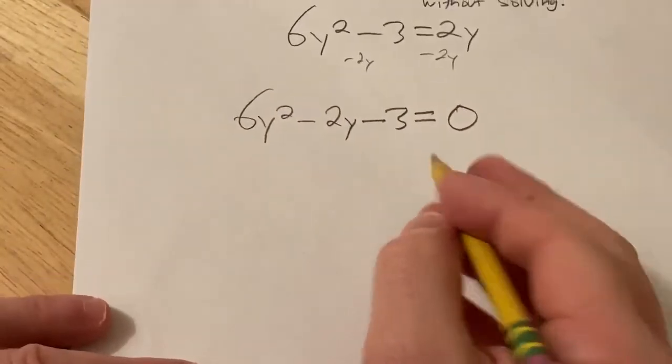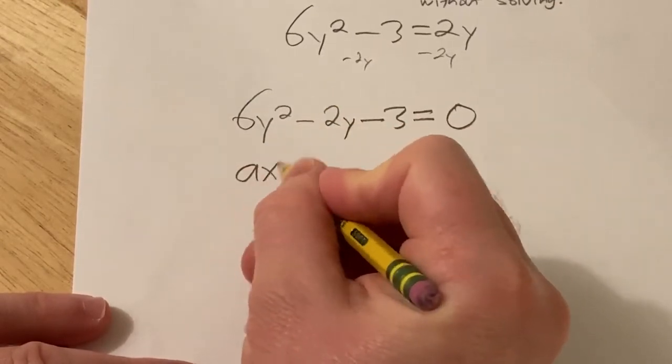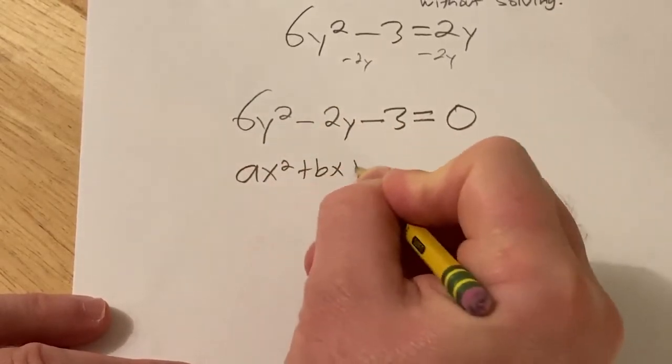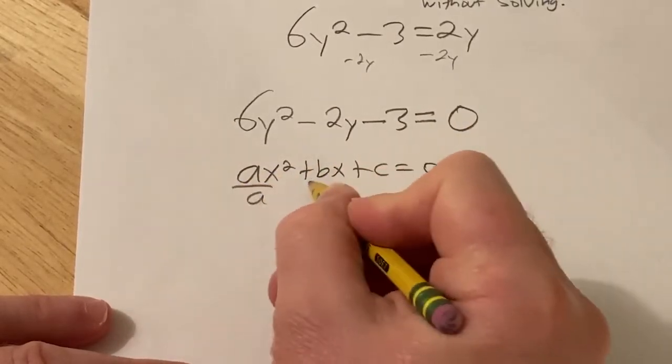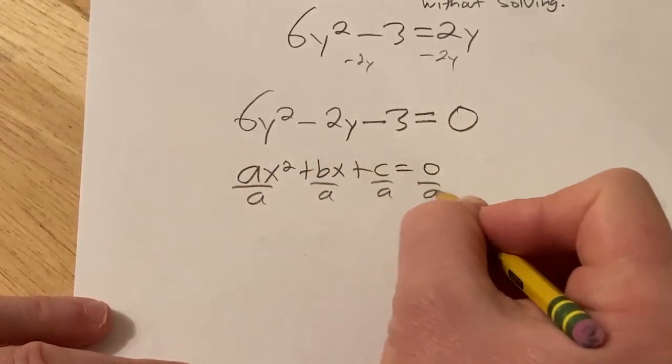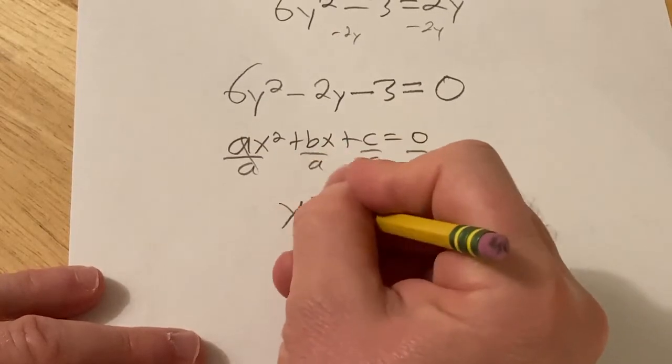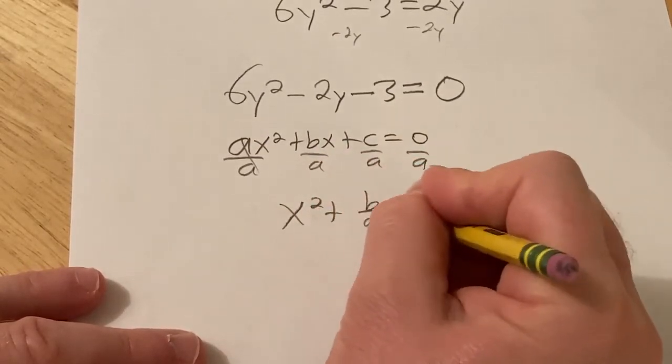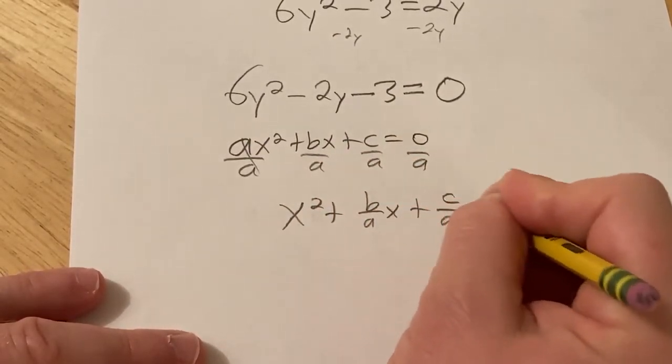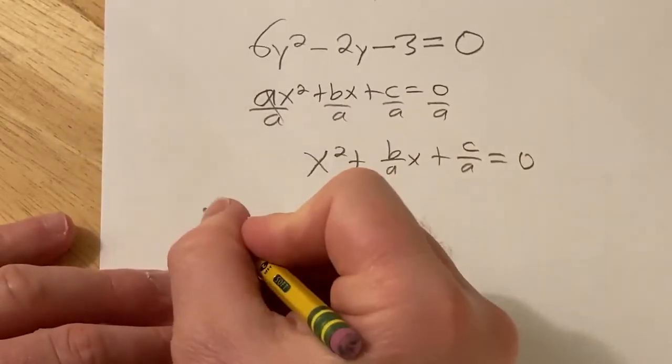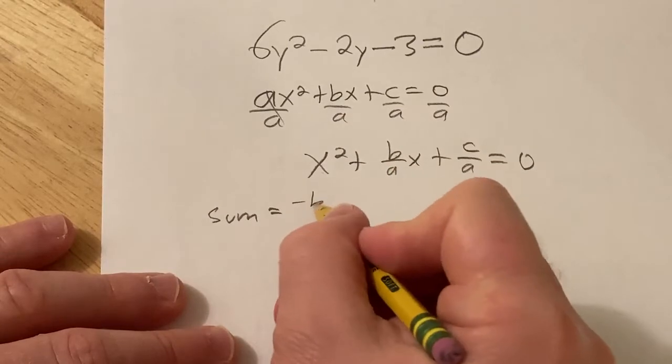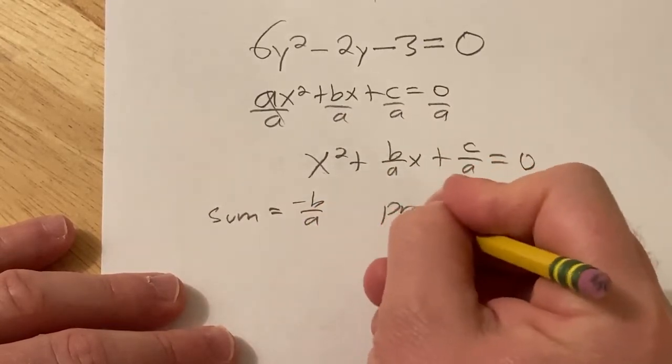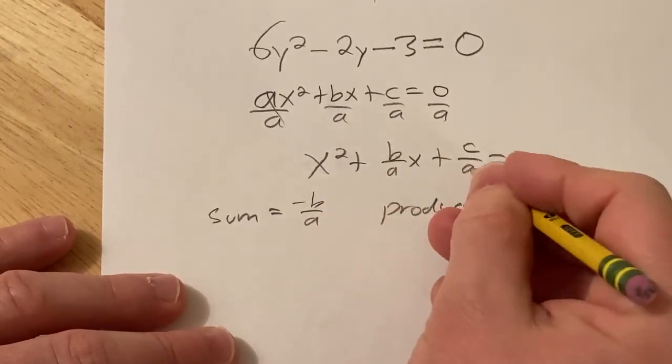And so the trick is the following. So if you have ax squared plus bx plus c equals 0, and you divide everything by a, then you have x squared plus b over a x plus c over a equals 0. Then the sum of the roots is going to be the opposite of this, and the product of the roots is going to be this here.